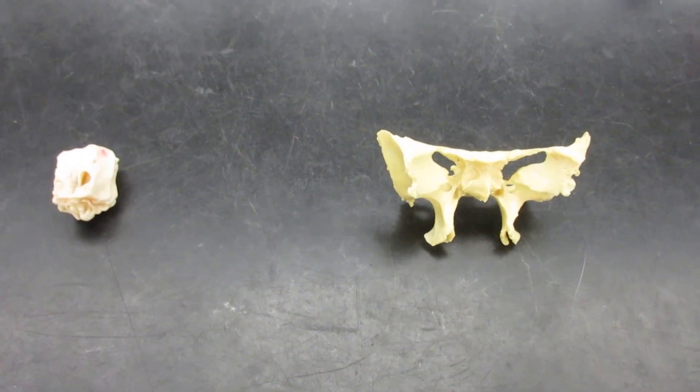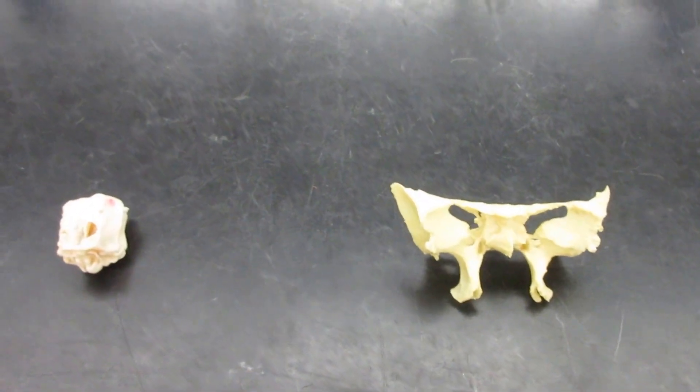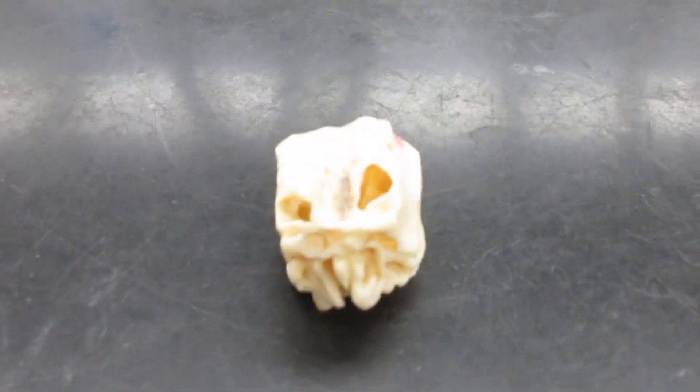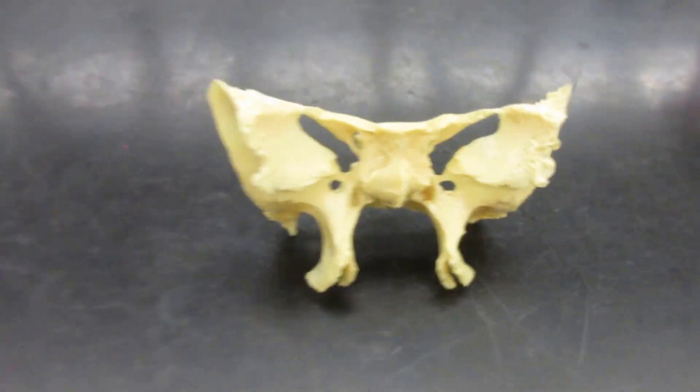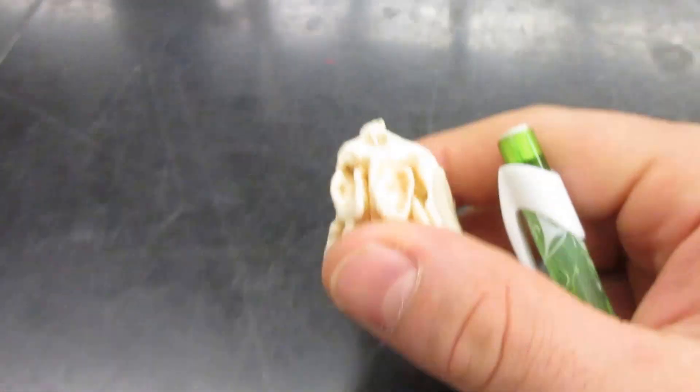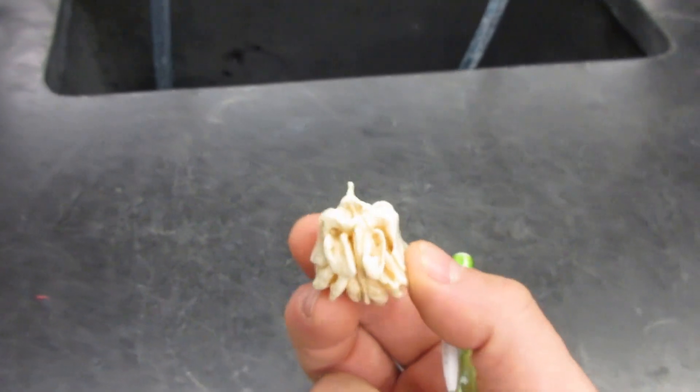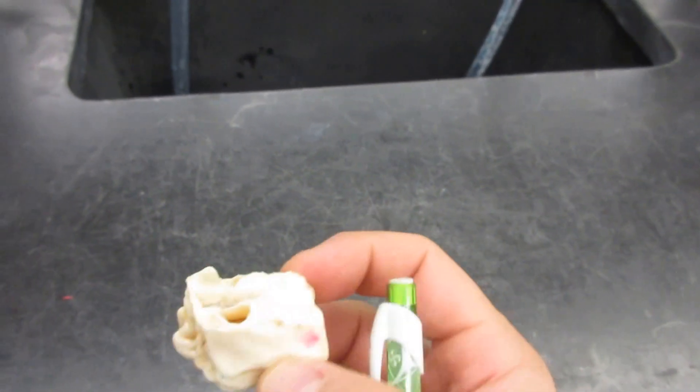In this video I want to talk about the two irregular bones you'll be seeing: the ethmoid bone and the sphenoid bone. The ethmoid bone has a very irregular shape and is found directly between your eyes.